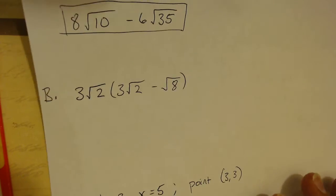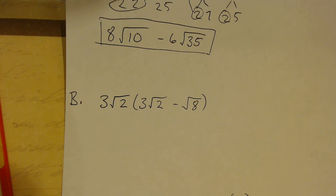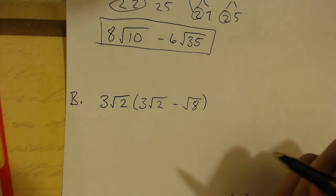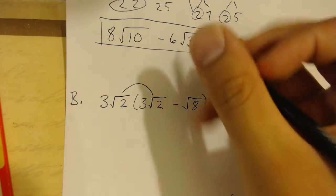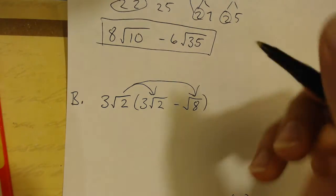Next, going on to practice B, we've got the same type of problem along with a little bit of distributive property. We're going to take 3 root 2, multiply it by 3 root 2, and then multiply it by negative square root of 8.